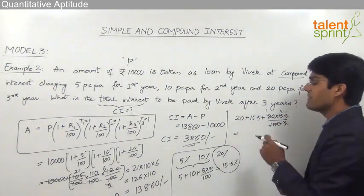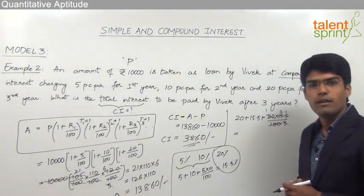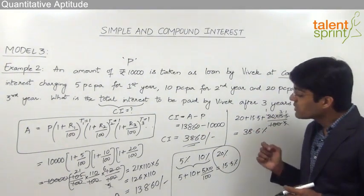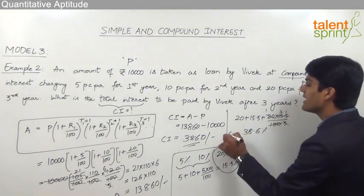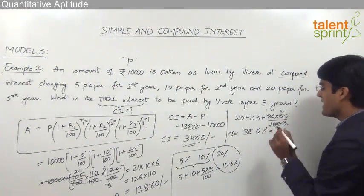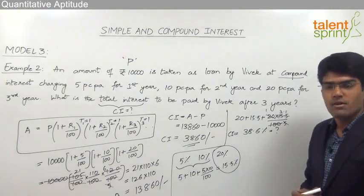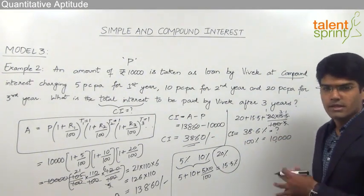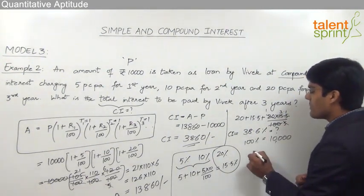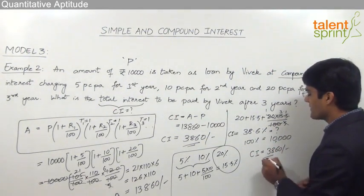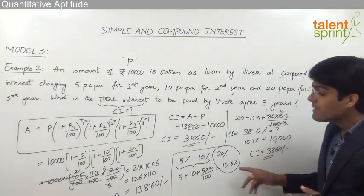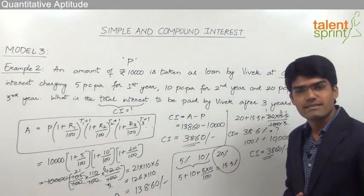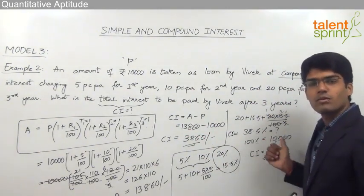20 + 15.5 = 35.5, and 20 × 15.5 / 100 = 3.1, so 35.5 + 3.1 = 38.6%. The total compound interest for all three years is 38.6%. Since 100% = ₹10,000, we get 38.6% = ₹3,860. This way we can find the compound interest directly using the net effective percentage formula, without computing the total amount and subtracting the principal.